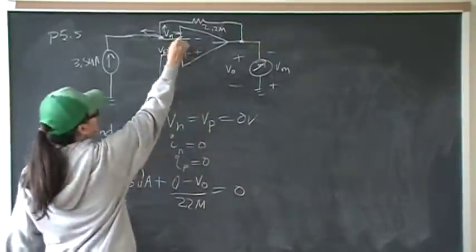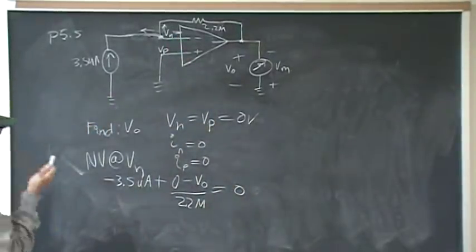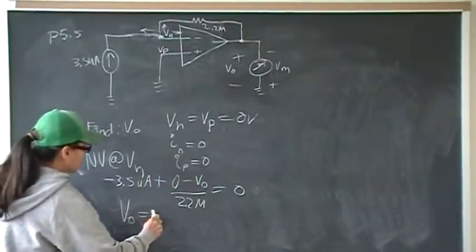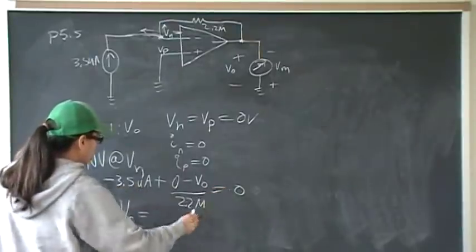And this current here is 0, so all that equals 0. This leaves us, if we solve for Vout, we'll have Vout equals, bringing this to the other side...